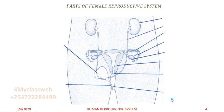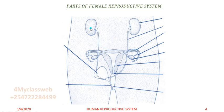I will use this diagram here to help show and explain the various parts of the female reproductive system. This diagram shows the position of the female reproductive parts in relation to other parts of the body.